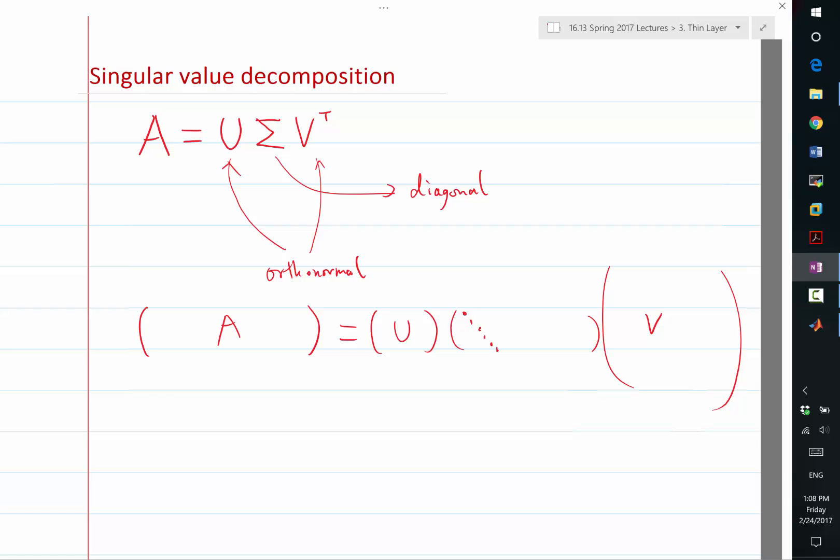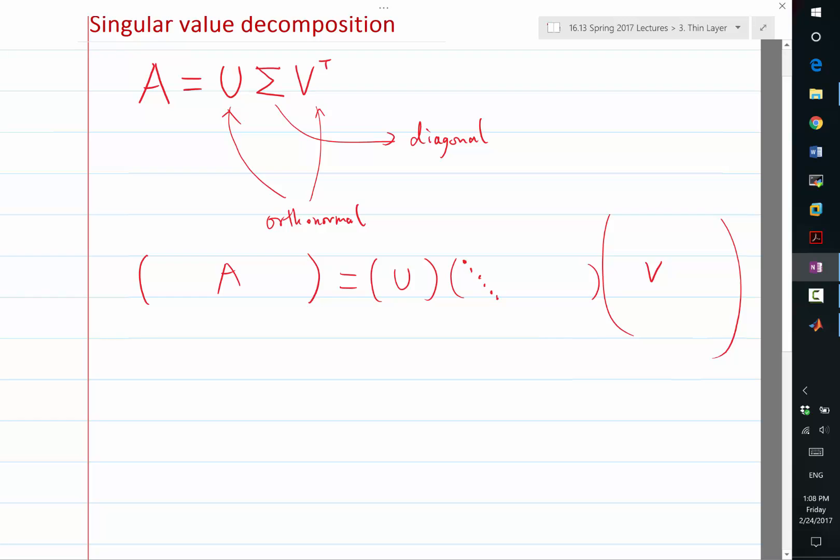Okay, so now we know what the form of sigma is, and particularly the right-hand side of sigma, if the matrix is a short and fat matrix, then we know what sigma is.